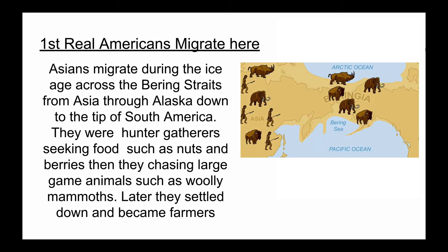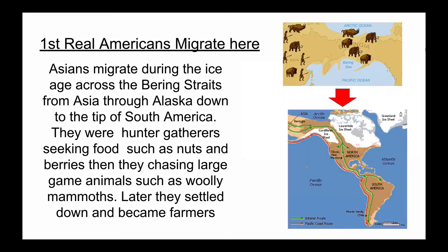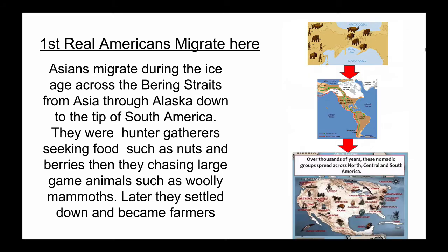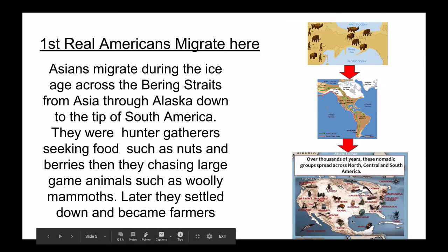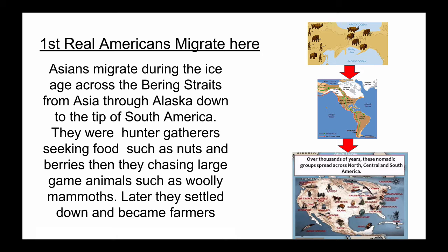Later they settled down and became farmers. This is the path they took — they went all the way down to South America. There are similar artifacts found in the Americas and Asia as evidence. Over thousands of years, these nomadic groups spread across North, Central, and South America, and you can see there are lots of different types of tribes that we recognize. The main ones we'll be talking about are the Aztecs and the Mayans. The Aztecs were basically the predecessors to many Mexicans today, and the Mayans are predecessors to people like the Guatemalans.